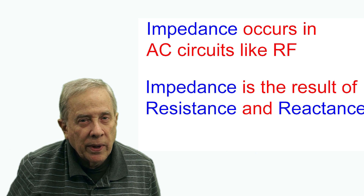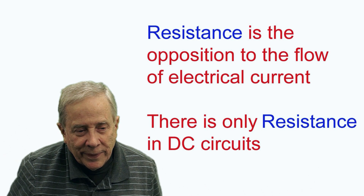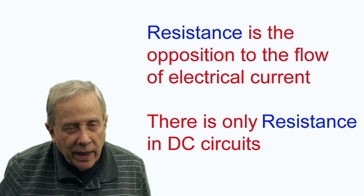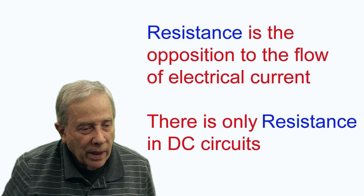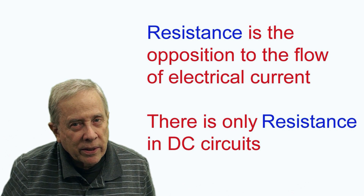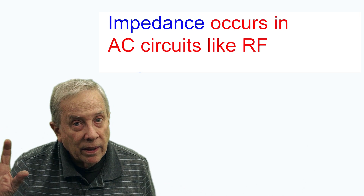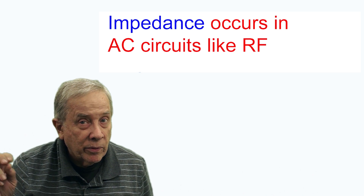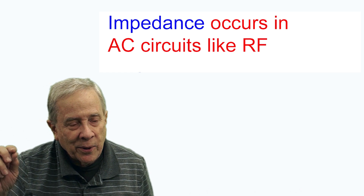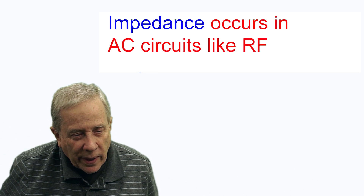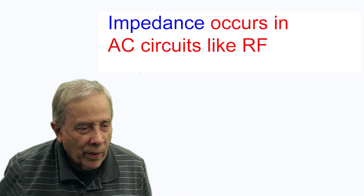Impedance is going to apply to AC circuits. Resistance is the opposition to the flow of current, and in a DC circuit for the most part there's really just resistance. When you get to an AC circuit, other things start to happen because of the alternating current. At RF, at 20 meters for example, it's 14 million cycles per second.